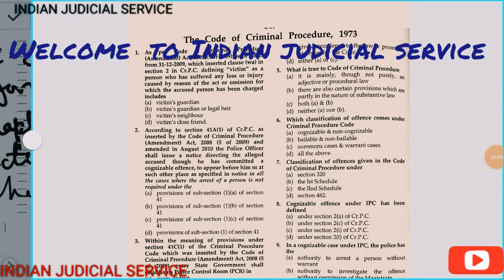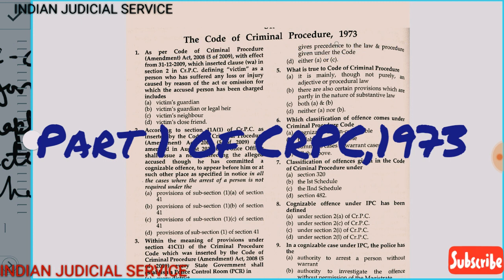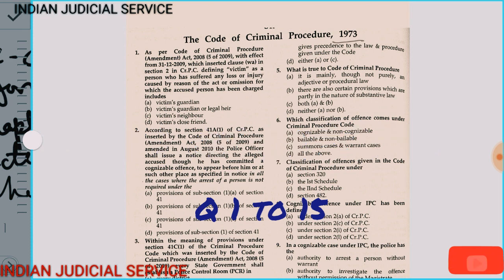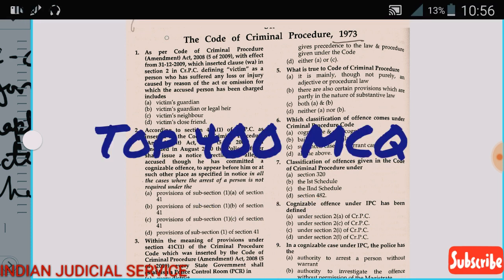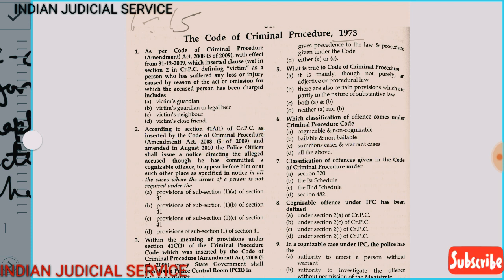Hello everybody, welcome to Indian Judicial Service. Today we are taking a very important topic: Code of Criminal Procedure Act 1973. This is the procedure code which provides the procedure of how the police work, how the code works, and what measures are taken by police to maintain peace and law and order. In this part we cover questions 1 to 15. In this video series we cover 400 most important questions of CrPC. Before starting, I will provide some important points belonging to CrPC.